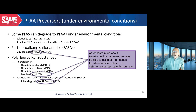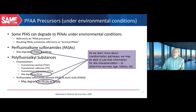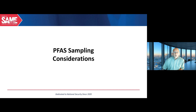Degradable PFAS are often referred to as precursors, and PFAAs that result are called terminal PFAAs. It's important to note that once a PFAA is formed, regardless of chain length, it will not readily degrade further — PFOA will remain PFOA and will not break down to a shorter chain PFAA under normal environmental conditions. This slide shows some of the major precursor PFAS groups and whether they have the potential to break down to PFCAs, PFSAs, or both. The identification of precursors is an ongoing area of research.